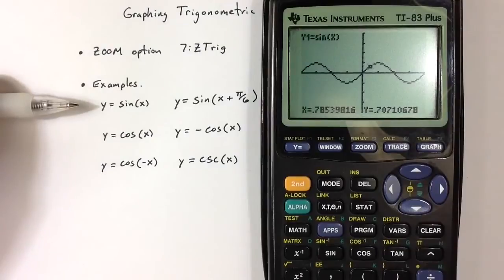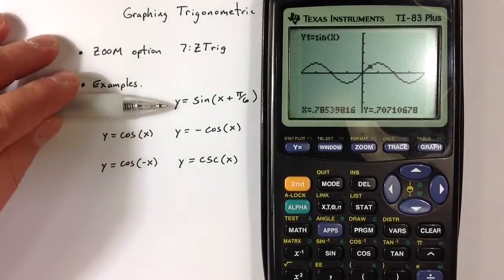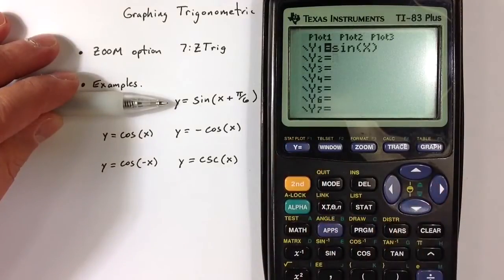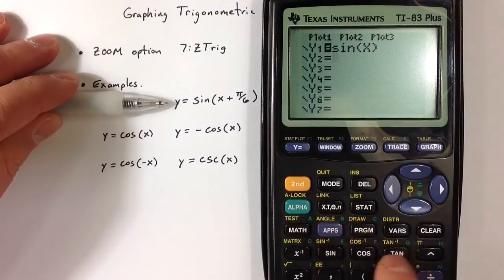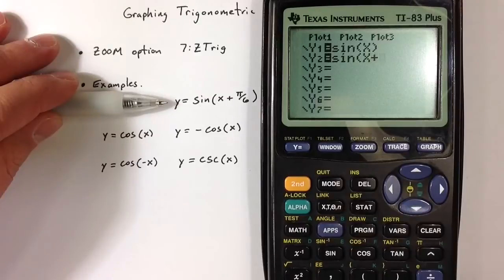Let's look at a few more complicated examples, or slightly more complicated examples. Rather than just a basic sine function, we might want to graph sine of x plus pi over 6. Let's take a look at what that looks like. So sine of x, and then if I add inside the sine function, if I add pi over 6,